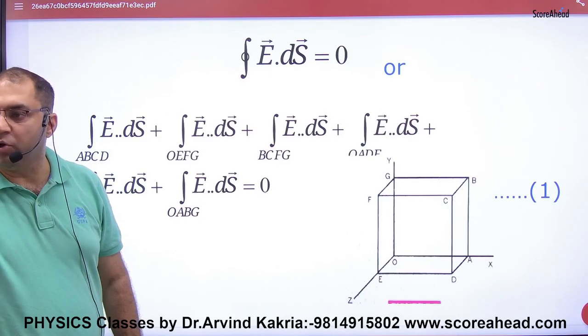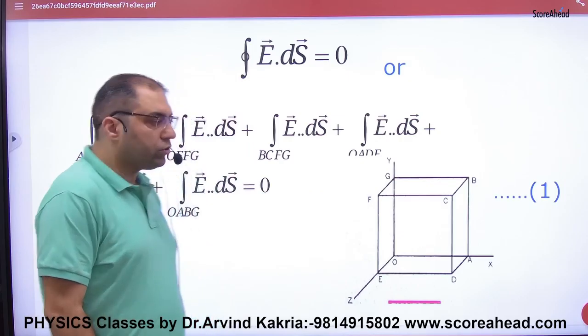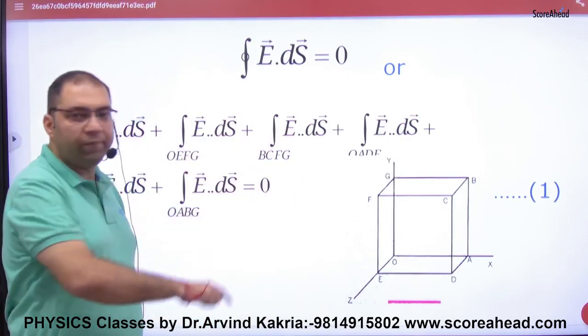Because it's a closed body, electric flux is zero because there's no charge. So it has 6 faces: 1, 2, 3, 4, 5, 6. So for 6 faces, ∮E·ds - what will it be? Zero.